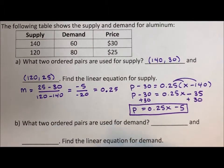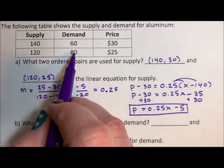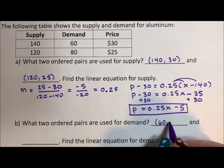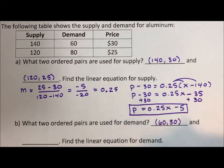What two ordered pairs are used for demand? So for demand, we have 60, 30. And notice for my ordered pairs, I always put it in parentheses. Without parentheses, it's not an ordered pair. And my second point is 80, 25.